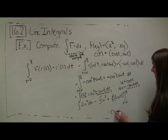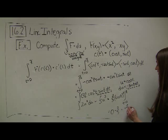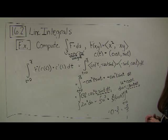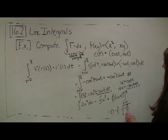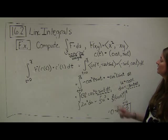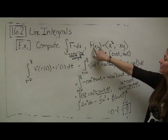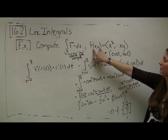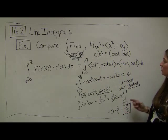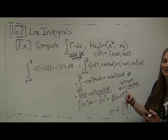The final answer is negative two-thirds. One thing to point out: our answer is negative. Does that make sense? Sure — it means that as I travel along this path, the work done by this vector-valued function is negative, so I'm going against the flow.